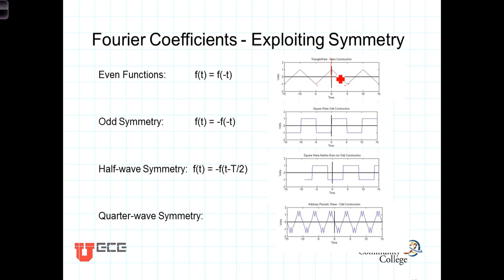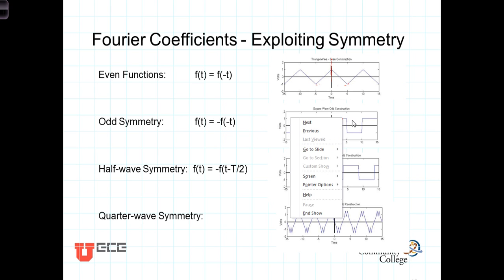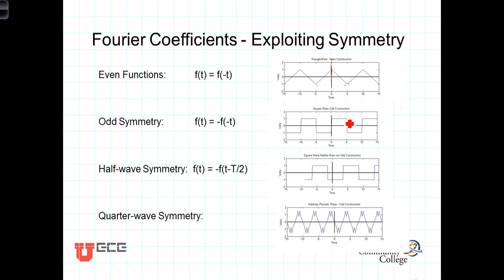Odd symmetry is characterized when f(t) is equal to negative f(-t). So here's f(t), say at 4. Then f(-t), over here at negative 4, is equal to the opposite value as it was at 4. Another term for odd symmetry is symmetry about the origin.